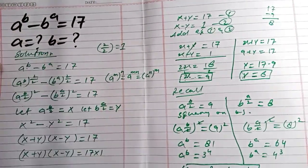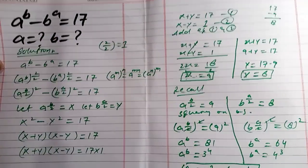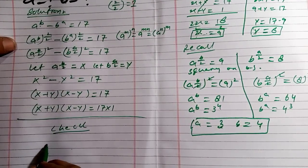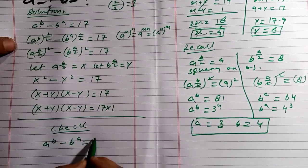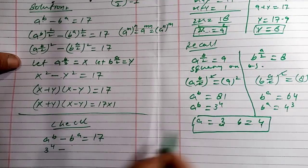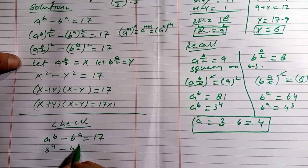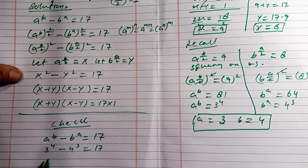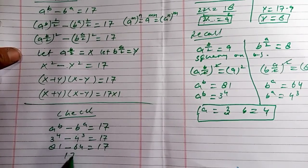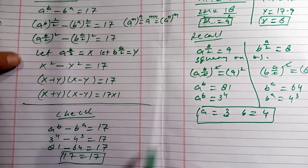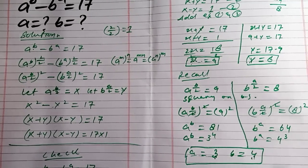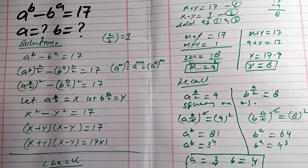Let's verify by substituting a = 3 and b = 4 back into the original equation: a^b − b^a = 3^4 − 4^3 = 81 − 64 = 17. Since 17 = 17, our answer is confirmed correct. Therefore a = 3 and b = 4 is our final answer.